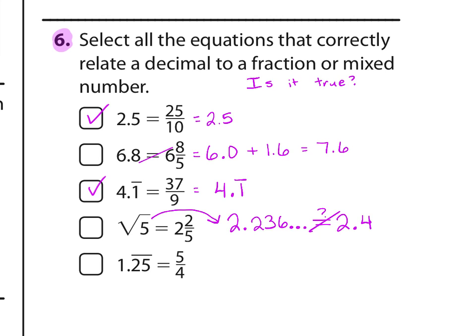And 1.25 repeating is very close to 5 fourths, but 5 fourths is 1.25, and that is not the same as 1.25 repeating. So all of these problems were just checking in the calculator. Were they true or false?